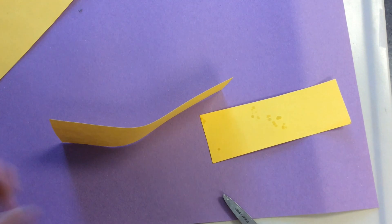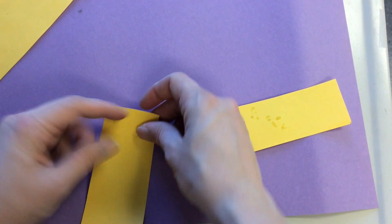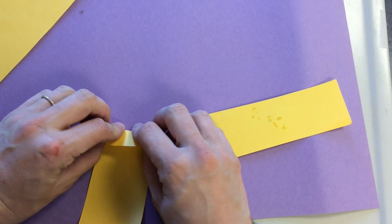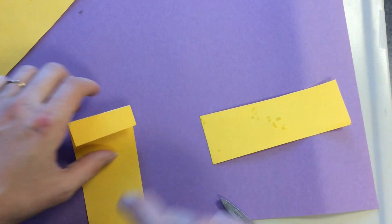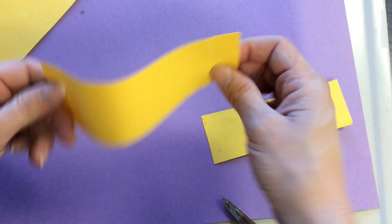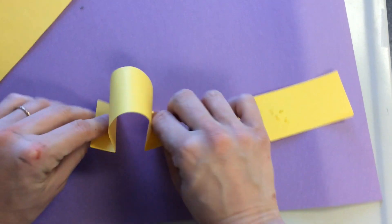To make my paper stand, I need feet or tabs. A tab should be about as thick as your finger. Now I have tabs on either side, or feet, for it to stand.